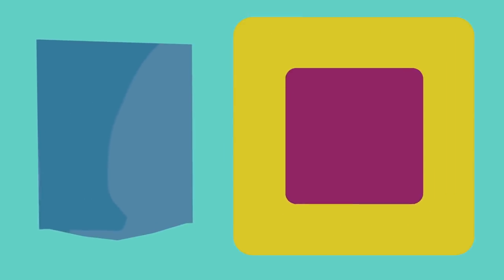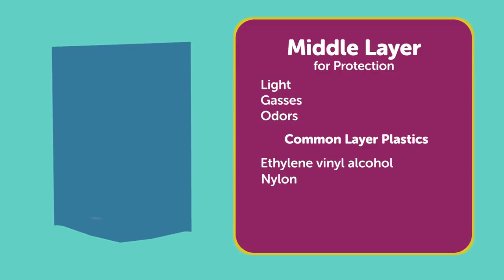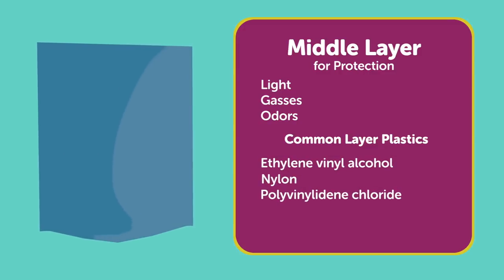The middle layer provides protection from light, gases, and odors. Some common materials for the middle layer include ethylene vinyl alcohol, nylon, polyvinylidene chloride, polyethylene, and polypropylene.